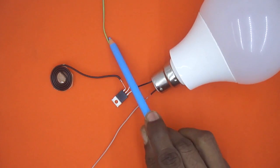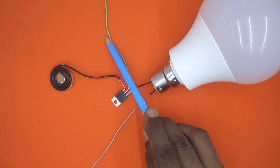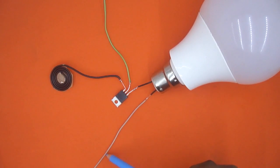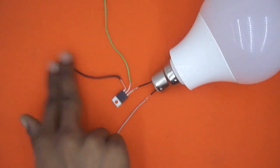If you will connect this wire to ground, this wire to the neutral of AC power supply and this wire to the phase of power supply, this will work perfectly. Now, you can see whenever I am touching, the bulb is glowing.